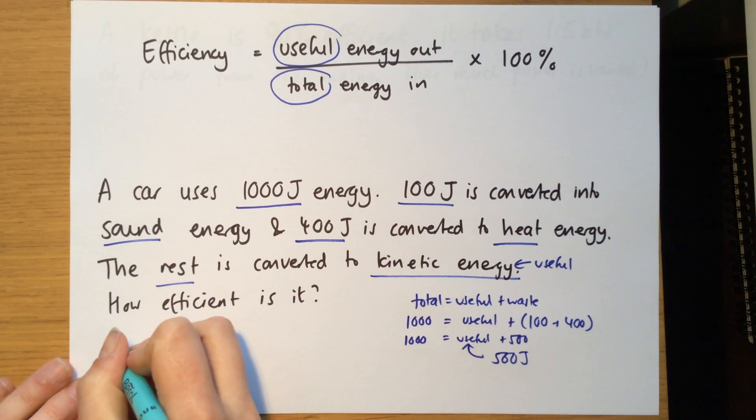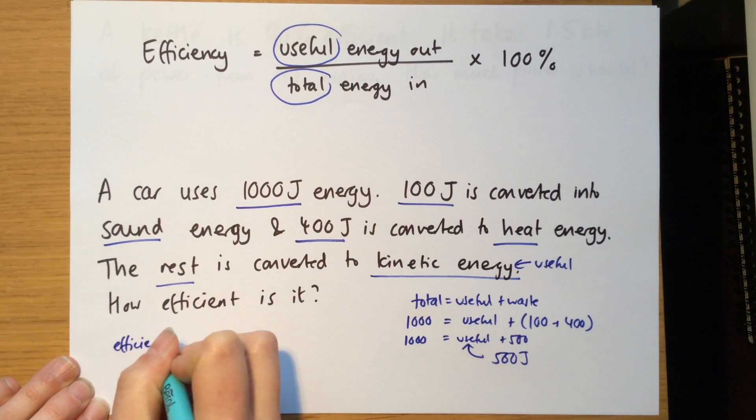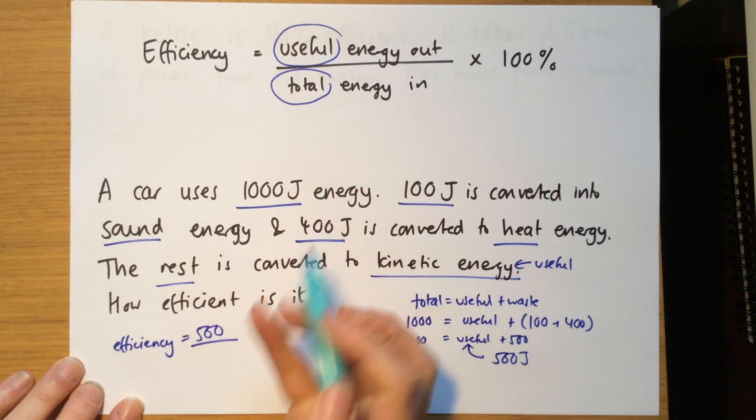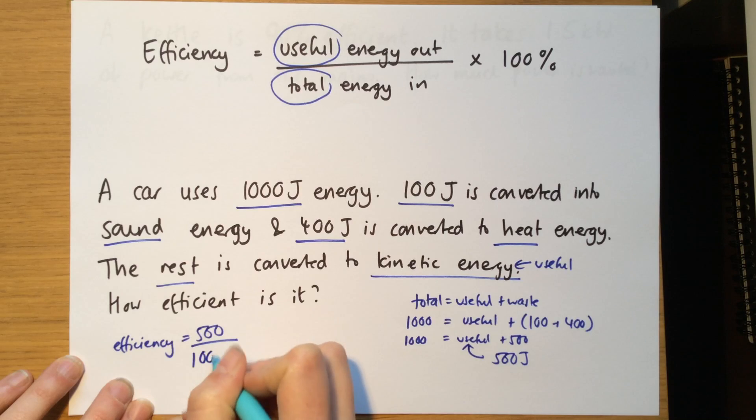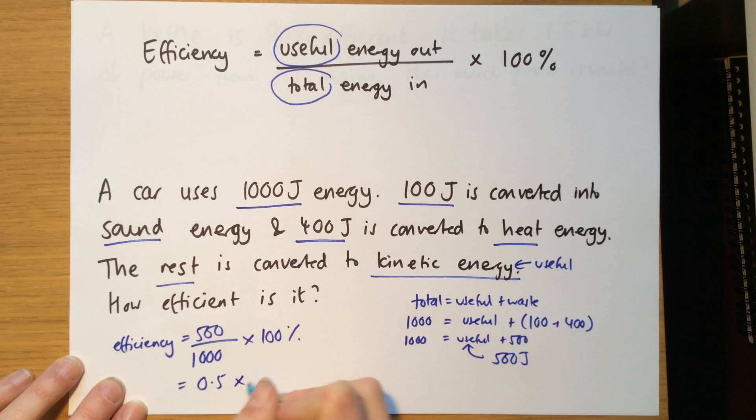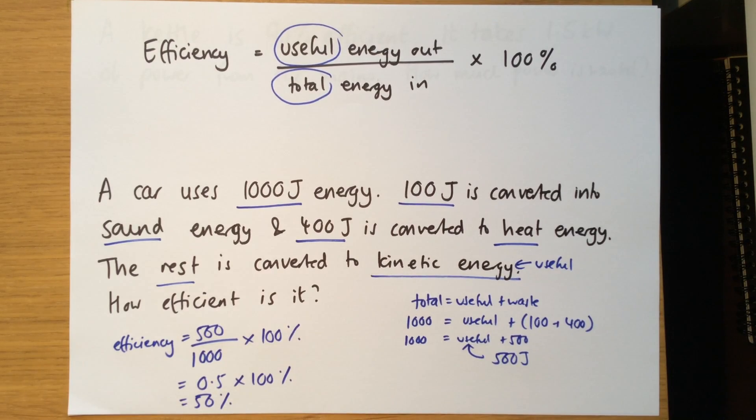So now let's look at our equation. We've got the efficiency equals the useful energy out, which we've just worked out as 500 joules, divided by the total energy in, which we were told at the start, is 1,000. Now, that would technically be chemical energy, because it's in petrol. And we times that by 100%. Now, 500 divided by 1,000 gives me 0.5. That's the decimal version of efficiency. Times by 100%, which is quite clearly 50%. So this engine is 50% efficient.